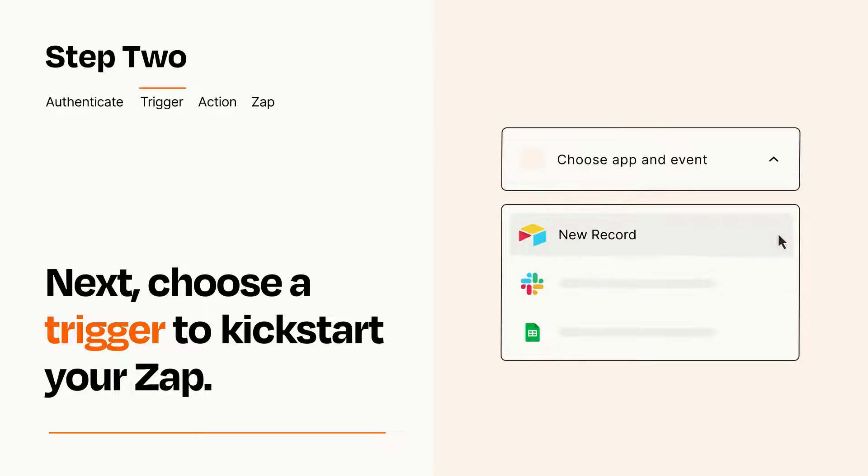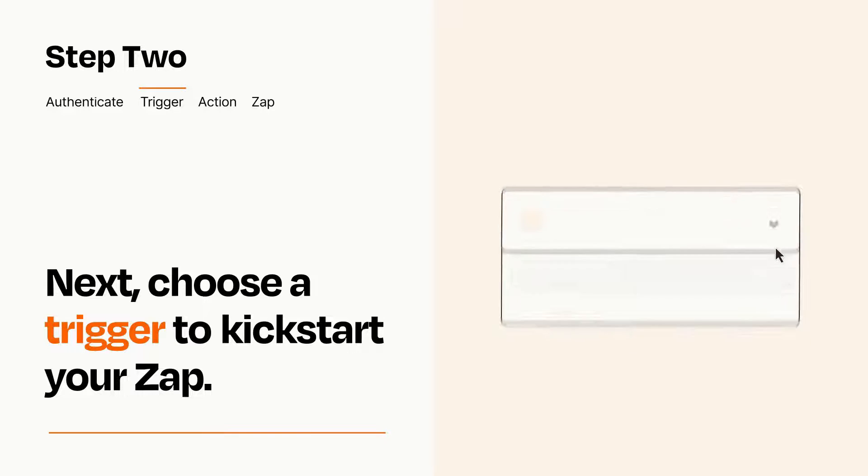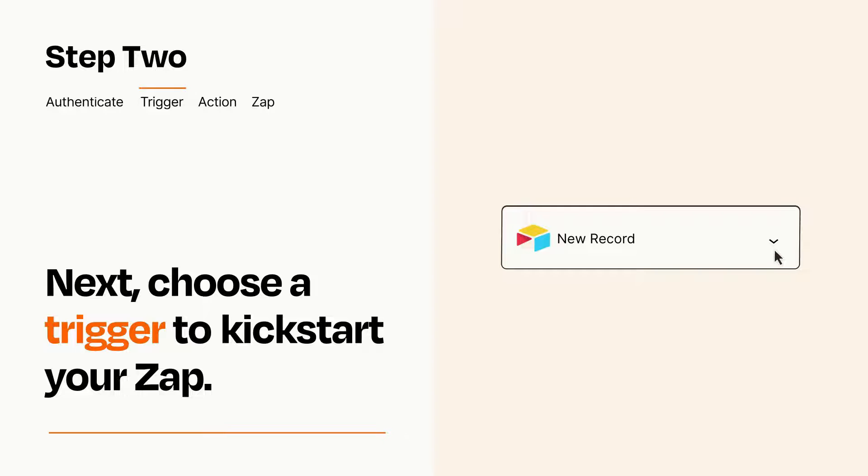When you set up this step, your Zap will pull in test data from your trigger app that you'll see later when setting up your action app.